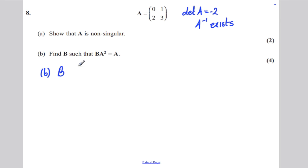Let your matrix B be A, B, C, D. Work out A squared. If you work out A squared, which is 0, 1, 2, 3 multiplied by 0, 1, 2, 3, you get 2, 3, 6, 11.